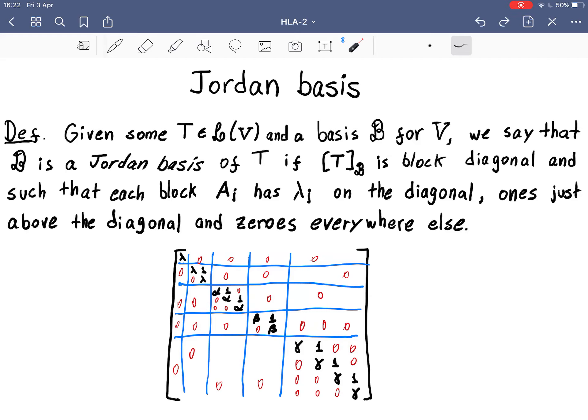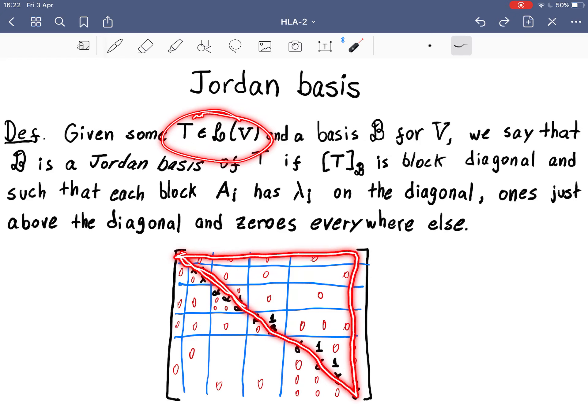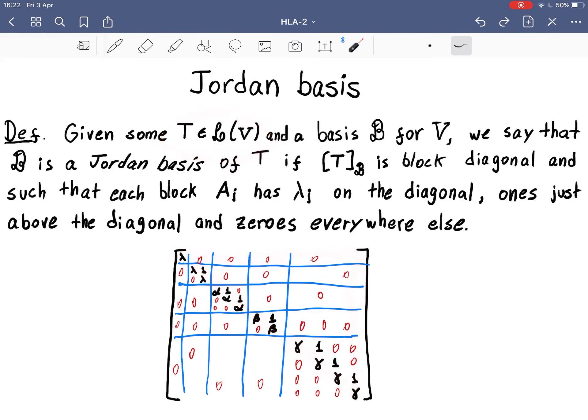So what do we know? Well, we saw already towards the end of the Honours Linear Algebra 1 course that for a complex operator on a finite dimensional inner product space, we can make the matrix upper triangular. And if it's upper triangular, then of course, what you have in the diagonals will be the eigenvalues.